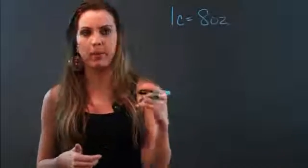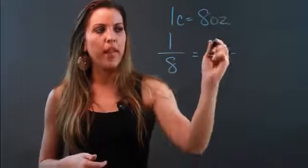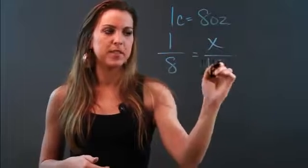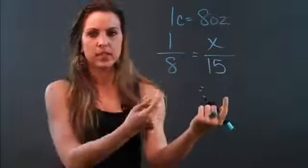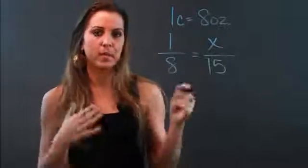So what I'm going to do is set up a proportion. If I know that one cup is 8 ounces, then I want to know how many cups are 15 ounces. And you have to make sure that when you set up your proportion, you do cups with cups and ounces with ounces. You always have to match up your units.